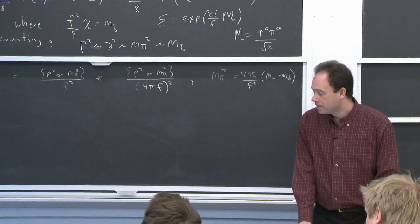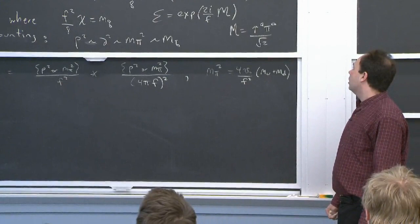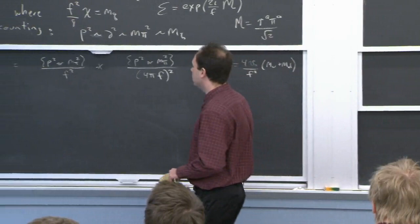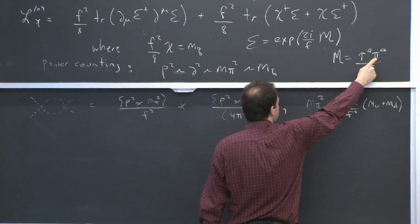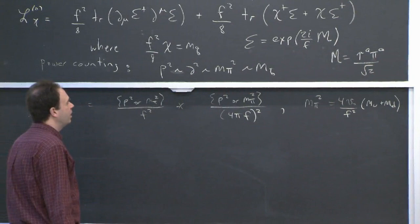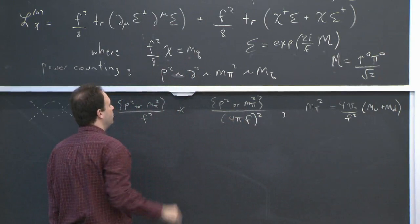We wanted to understand nonlinear symmetry representations. We went through how you could think about linear representations, making changes of variable and putting the Lagrangian into a form where you could see the nonlinear realization explicitly, as well as constructing it from the bottom up by parameterizing the coset. Then we started talking about loops in chiral perturbation theory, and I gave you this example of a loop.